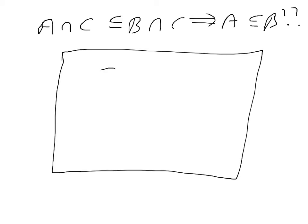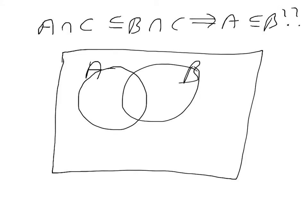Okay, so let's draw some general A's and B's. So the question is, is it possible to fill in a C so that the part of A that lies in C is contained in the part of B that lies in C, yet A is not a subset of B? Well, if we just simply picked C to be this region here, well then A intersect C would be this region, and B intersect C would also be this region.